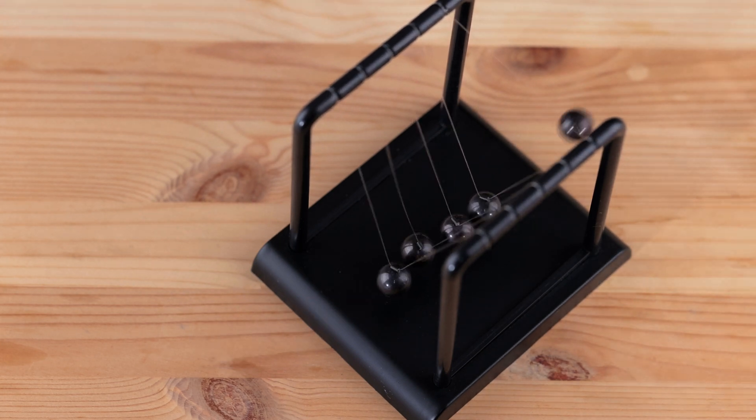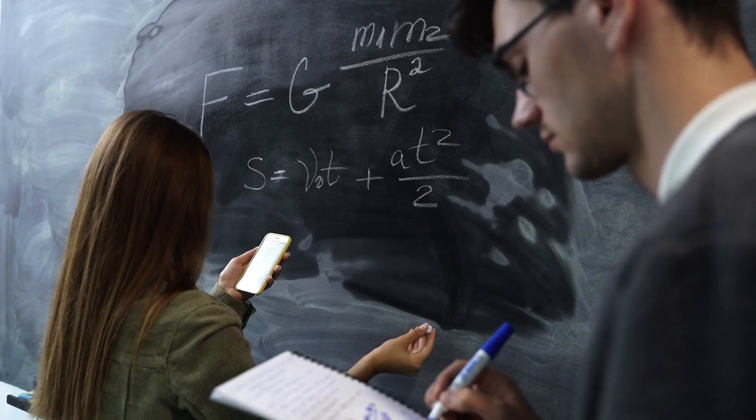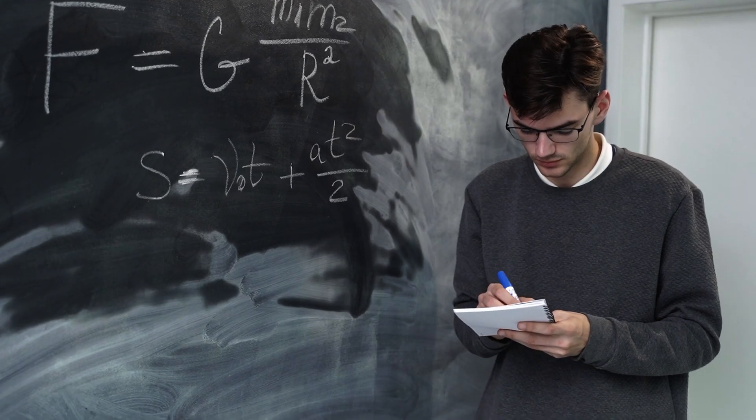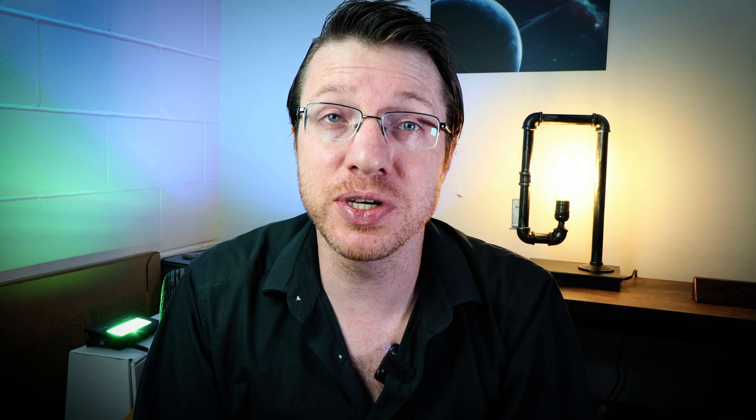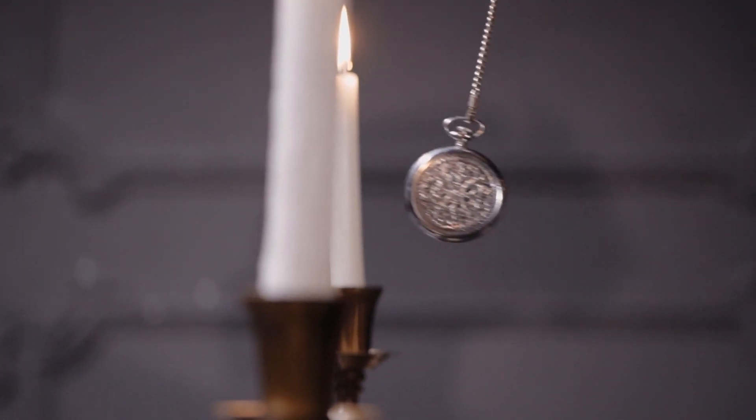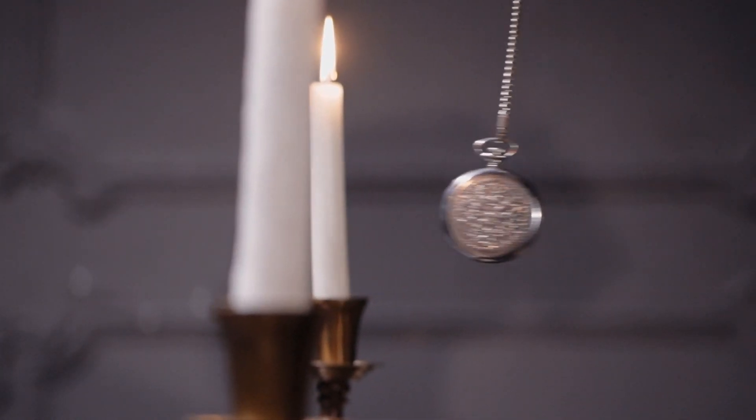Much of classical physics models reality through what are called differential equations. That boils down to force equals mass times acceleration. Acceleration is the second derivative of position, and if we know our forces and initial conditions, then we have a model for what should happen in terms of a second order initial value problem.